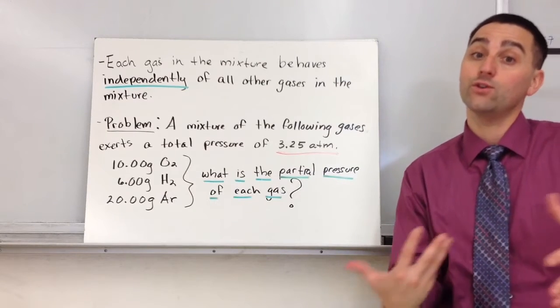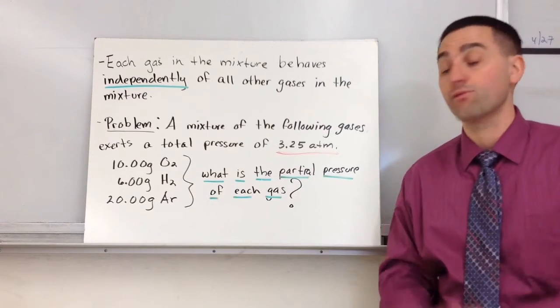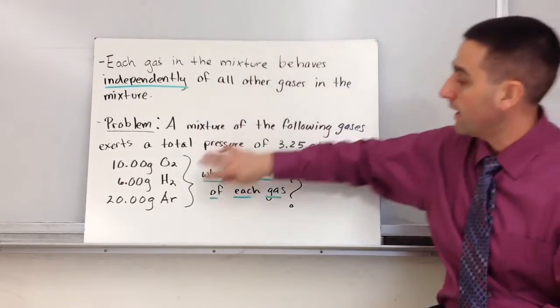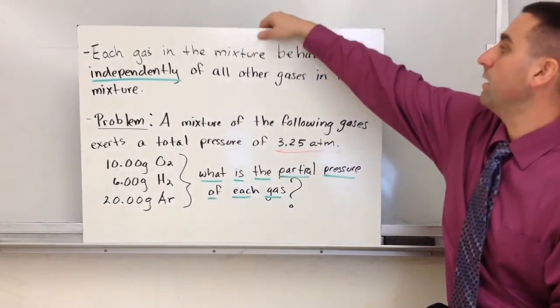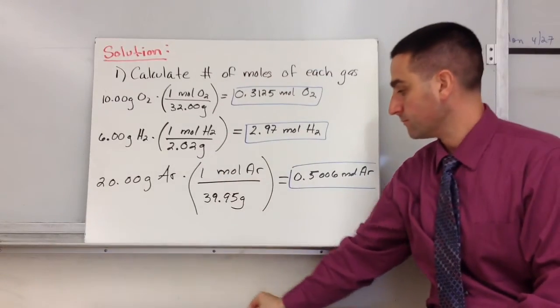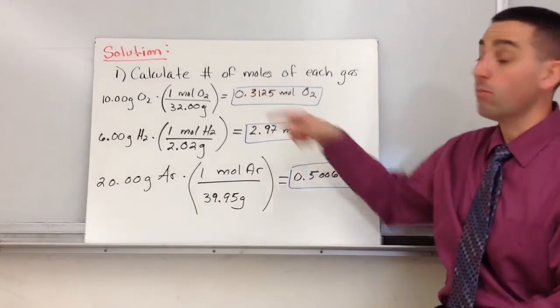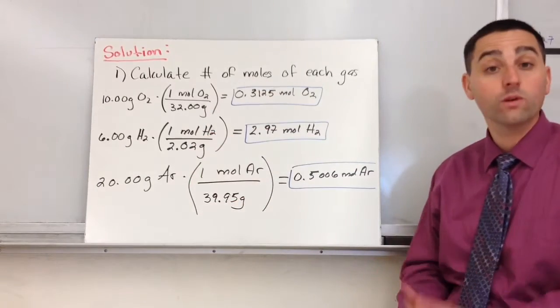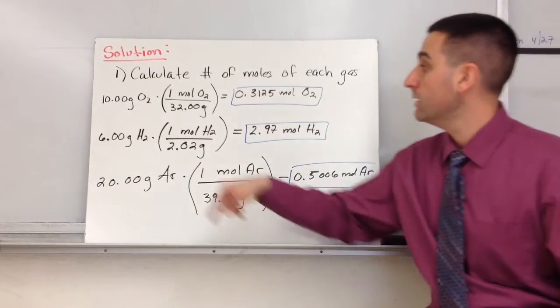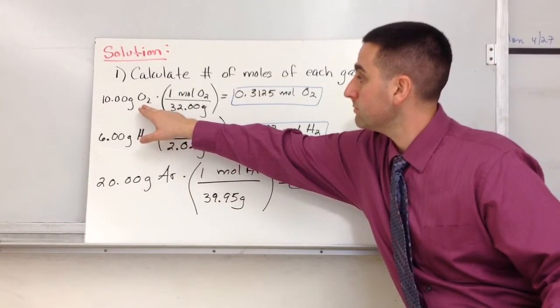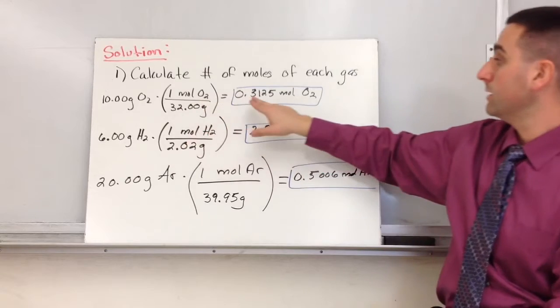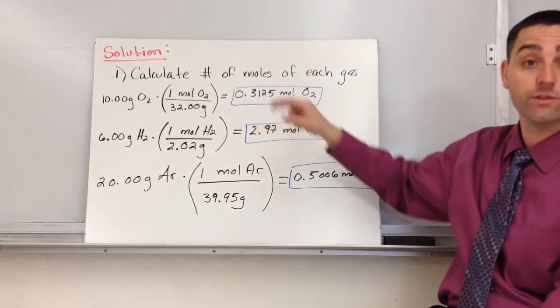Which would eventually tell you how much partial pressure each gas exerts. Here's what I did. I took these masses of each gas and I converted them to moles of each gas, simply by dividing by the molar mass of each one of these three gases. So 10 grams of O2 divided by the molar mass of O2, which is 32 grams, gets me my number of moles of O2.